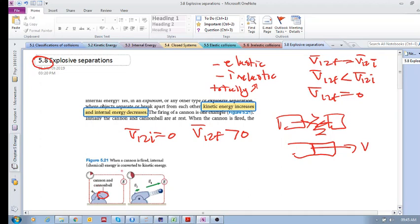There is internal energy, and as this goes through the explosion, that internal energy gets converted into kinetic energy. And as you can see, it's now got a final relative velocity.